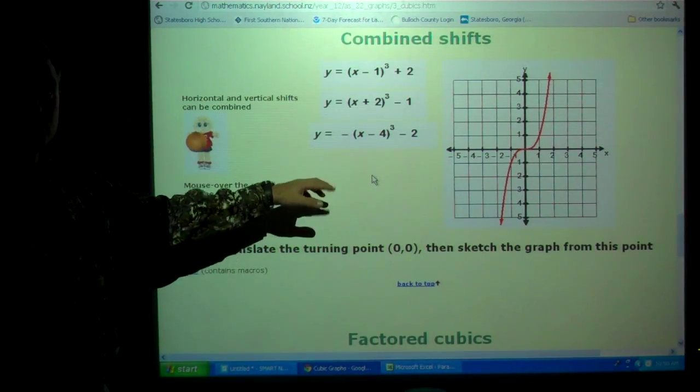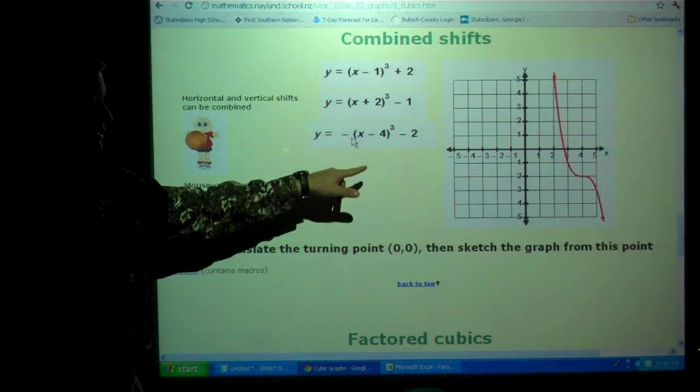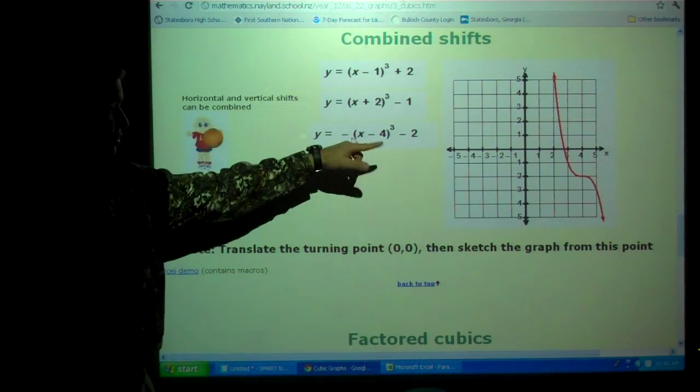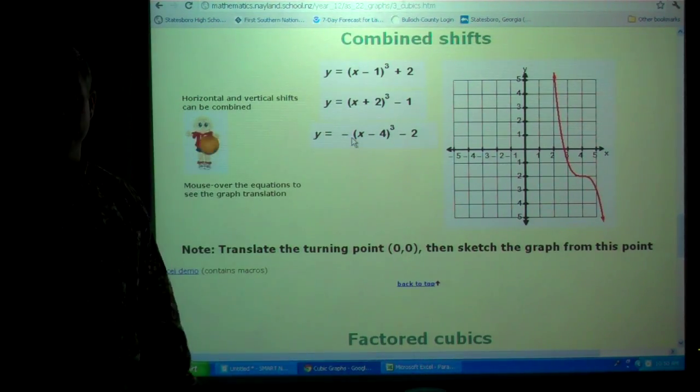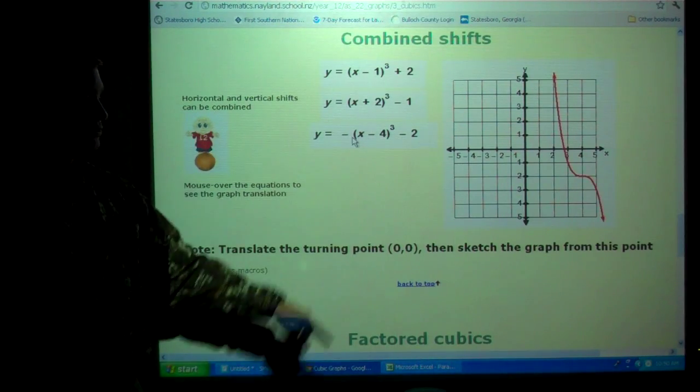This one here? Yeah, okay. Alright, so here we go. So, this is that one. We went 4 to the right and down 2 and we inverted. There's regular, there's the graph.